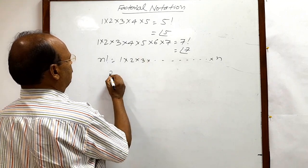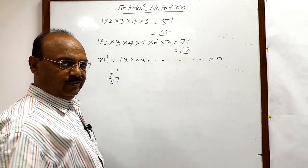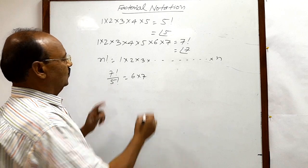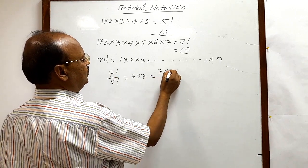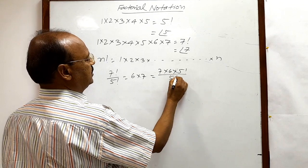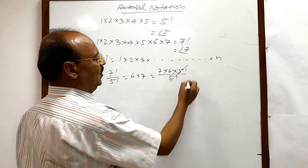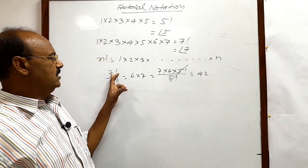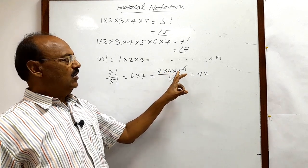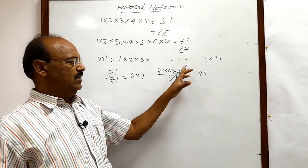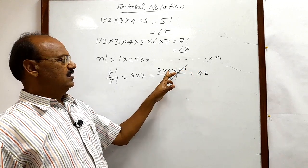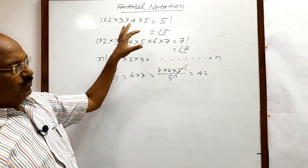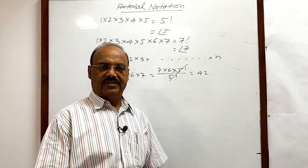Suppose we have to simplify 7! divided by 5!. The result is 6 × 7. How? Because the numerator is 7 × 6 × 5! and the denominator is 5!. The 5! cancels out, leaving 7 × 6 = 42. In 7! we write 5! separately because 5! already contains the product of the first 5 natural numbers, and 7! just adds 6 × 7 on top. In this way we can simplify expressions with factorial notation very easily.